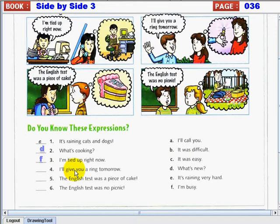Number 4. I'll give you a ring tomorrow. Again, I'll give you a ring tomorrow. What is the answer? It's A. I'll call you. That's good.